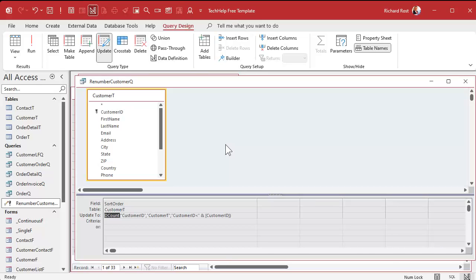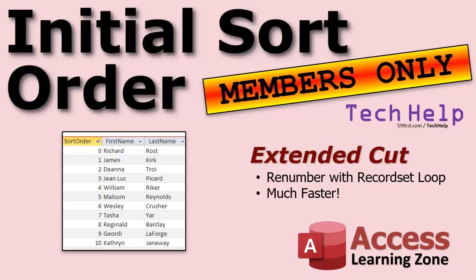That's what I'm going to cover in the extended cut. For members, we're going to use a record set loop and some VBA with a little counter — run through the records fast and auto-number them. With this method it's much, much easier to sort these differently. So if you want to initially sort these based on last name, first name, email address, date added, whatever, it's easier to add a sort. You have to be careful sorting with just a query like I showed you, because if you've got duplicates their number might be the same. In the VBA method, you won't have that problem.